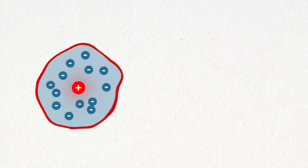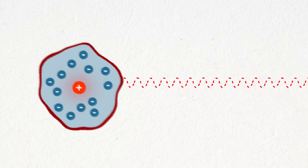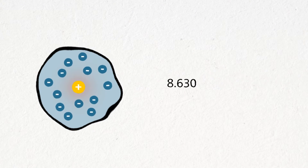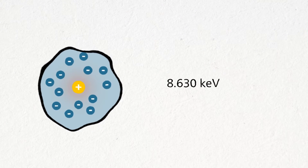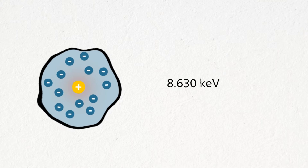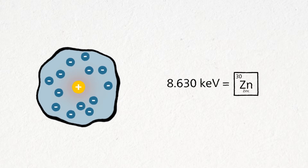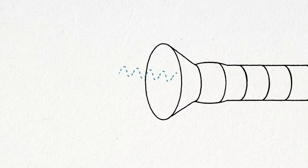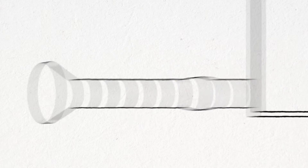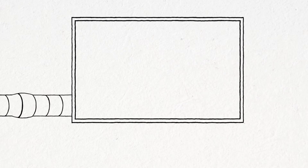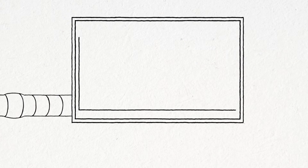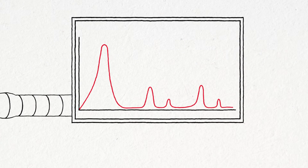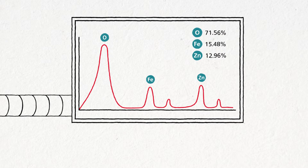If this happens, an X-ray is generated which has a very characteristic energy that can be associated with the atom that generated it. By measuring the number of these X-rays and their energy, we can not just determine which elements are in the material but also their ratio.